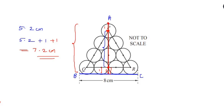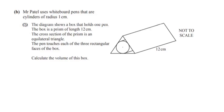Now let us look at part B2. Mr. Patel uses whiteboard pens that are cylinders of radius 1 centimeter. The diagram shows a box that holds one pen. The box is a prism of length 12 centimeters. Its cross-section is an equilateral triangle, meaning all angles of the triangle are 60 degrees.